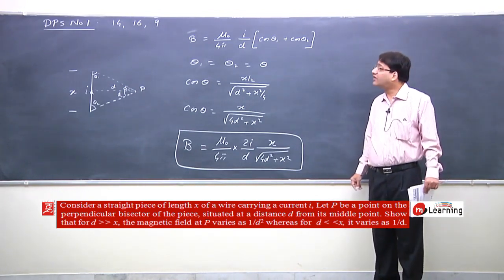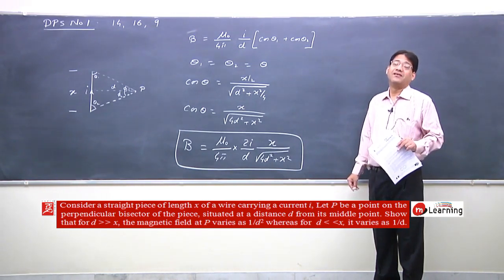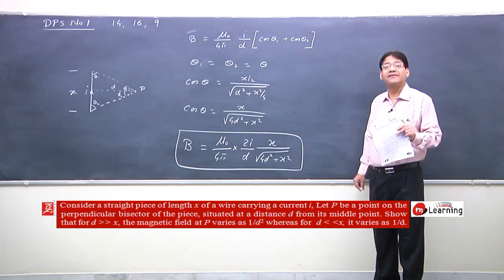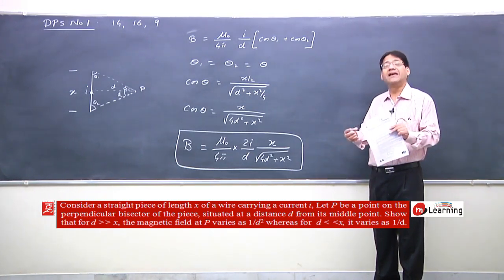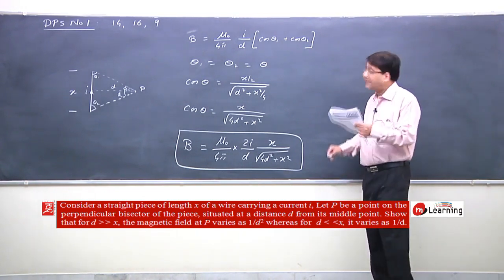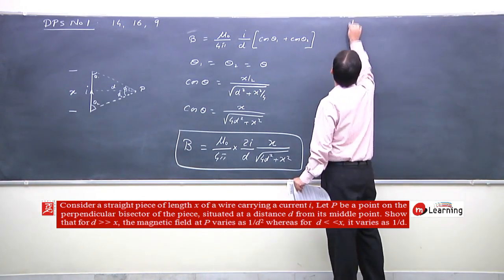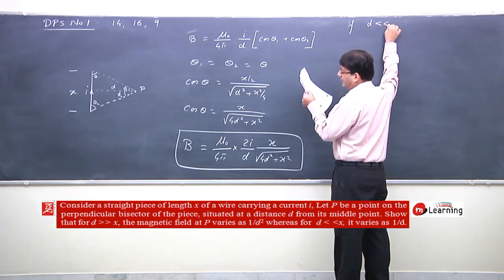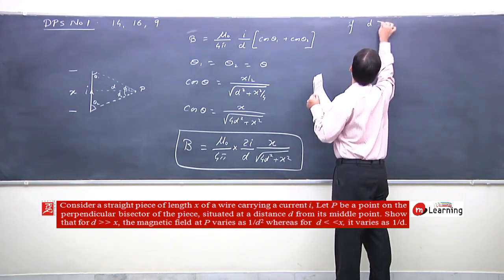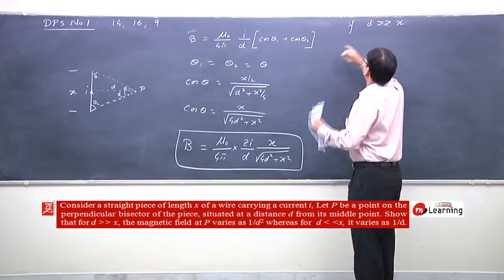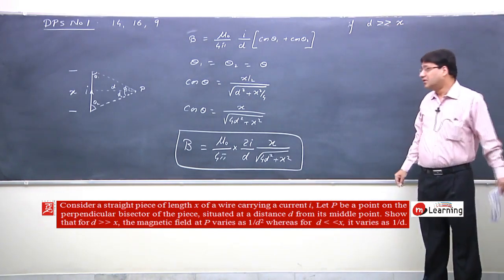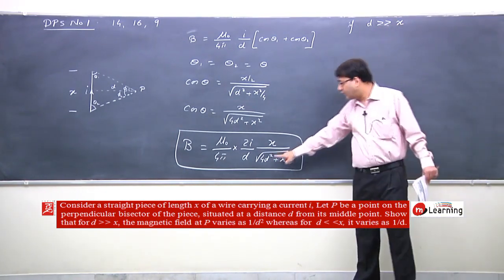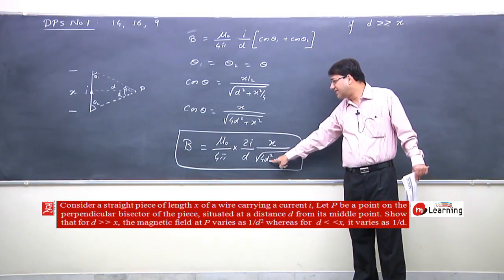Here we have the concept of limits. In physics, this is a fusion of calculus limits with the magnetic field expression. The first case: if d is very very small compared to x.